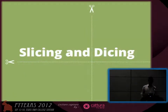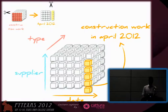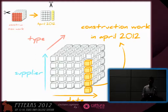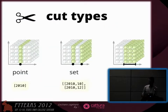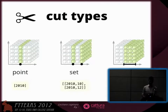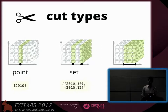Another function is slicing and dicing. For example, with contract data you can get construction work in April 2012. You have three kinds of cuts you can make through a cube: a single point cut, a set of multiple points, and a range cut for ordered dimensions such as date.